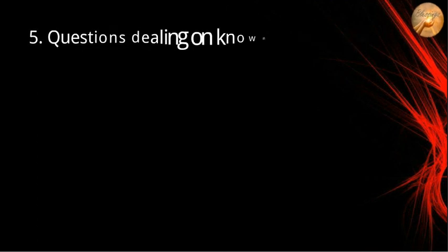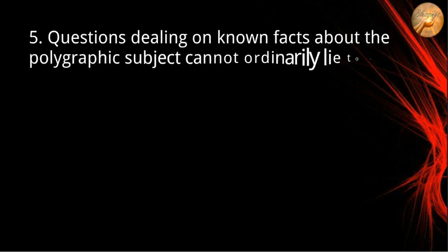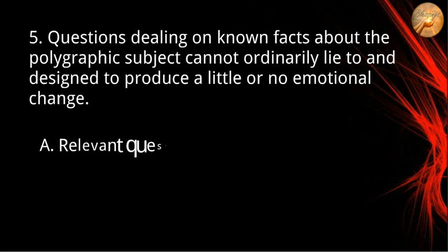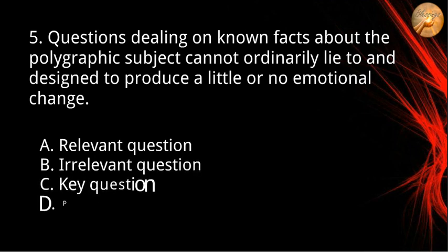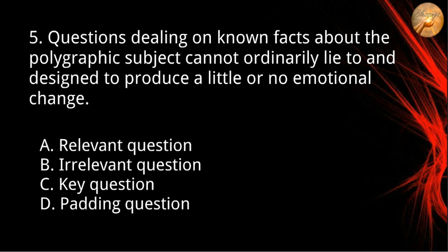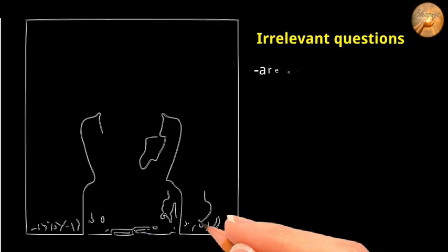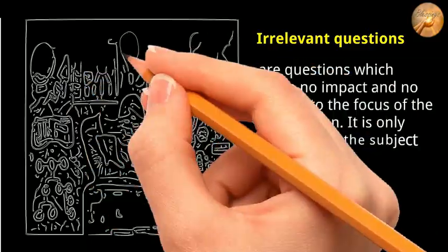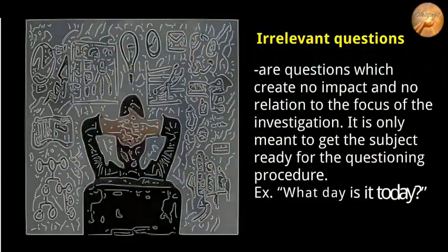Number five: questions dealing with unknown facts about the polygraphic subject, which the subject cannot ordinarily lie to, and designed to produce little or no emotional change. A) relevant question, B) irrelevant question, C) key question, D) padding question. The correct answer is letter B, irrelevant question. Irrelevant questions create no impact and have no relation to the focus of the investigation; they are only meant to get the subject ready for the questioning procedure. An example would be: 'What day is it today?'